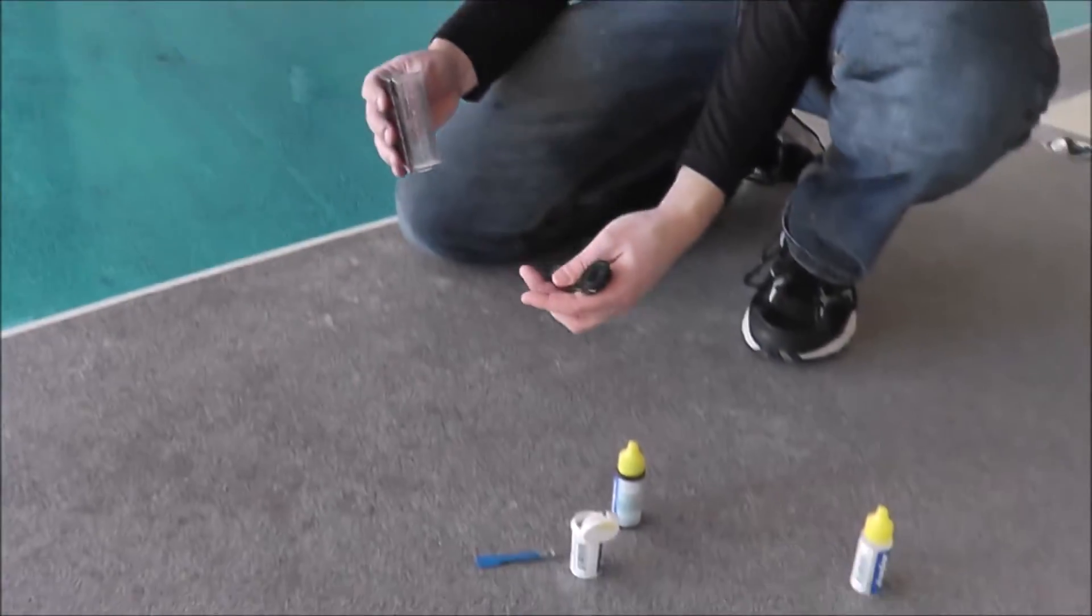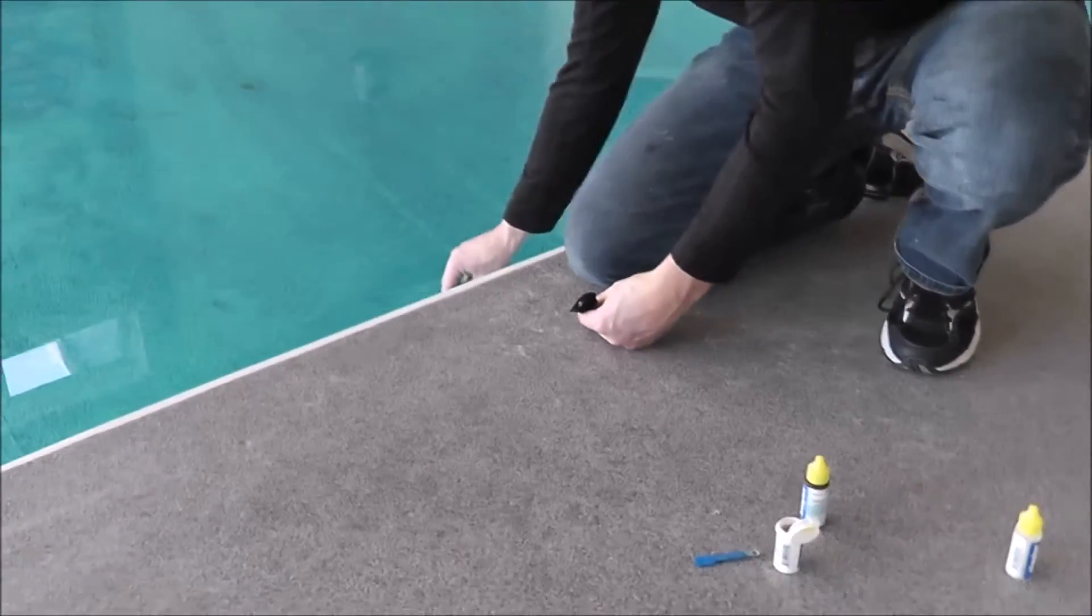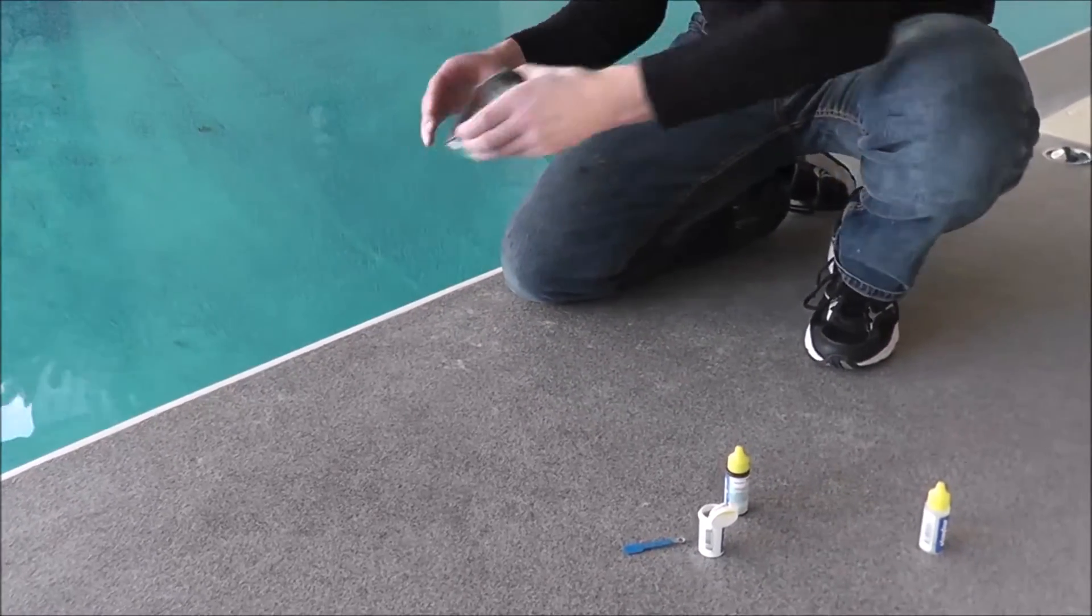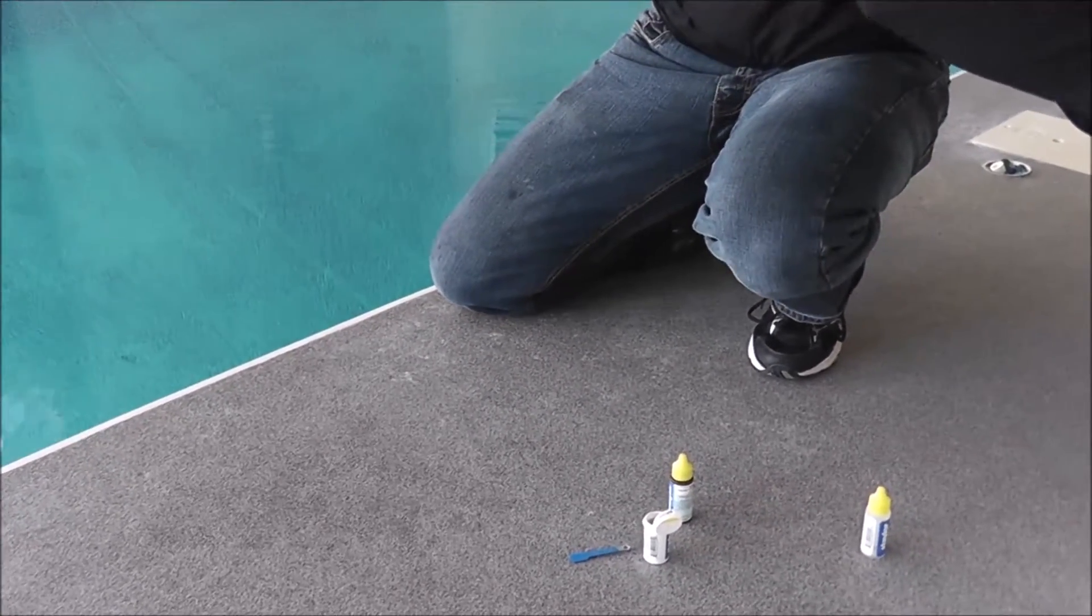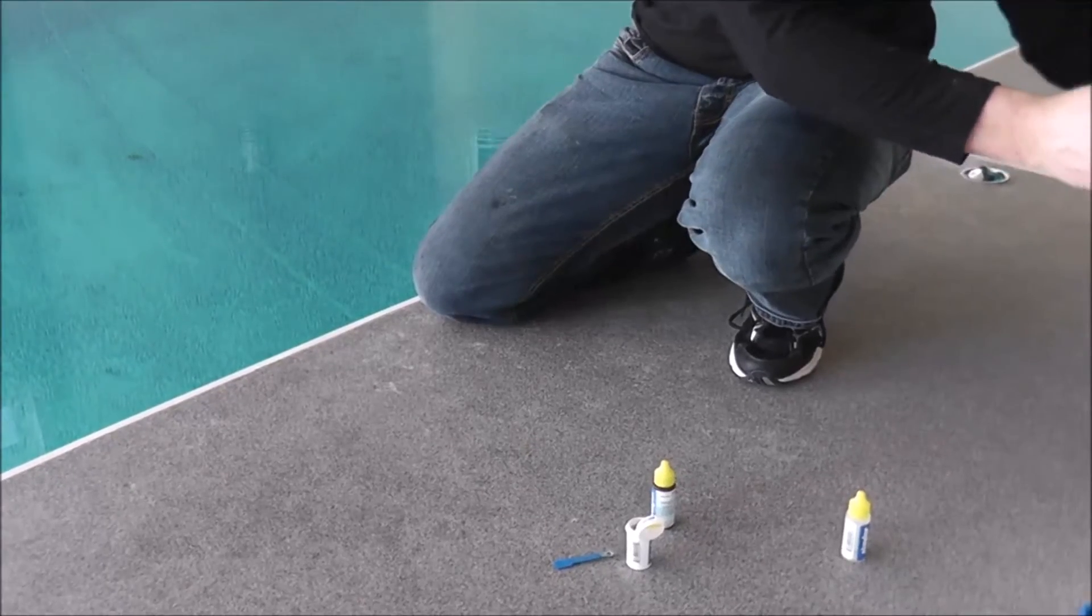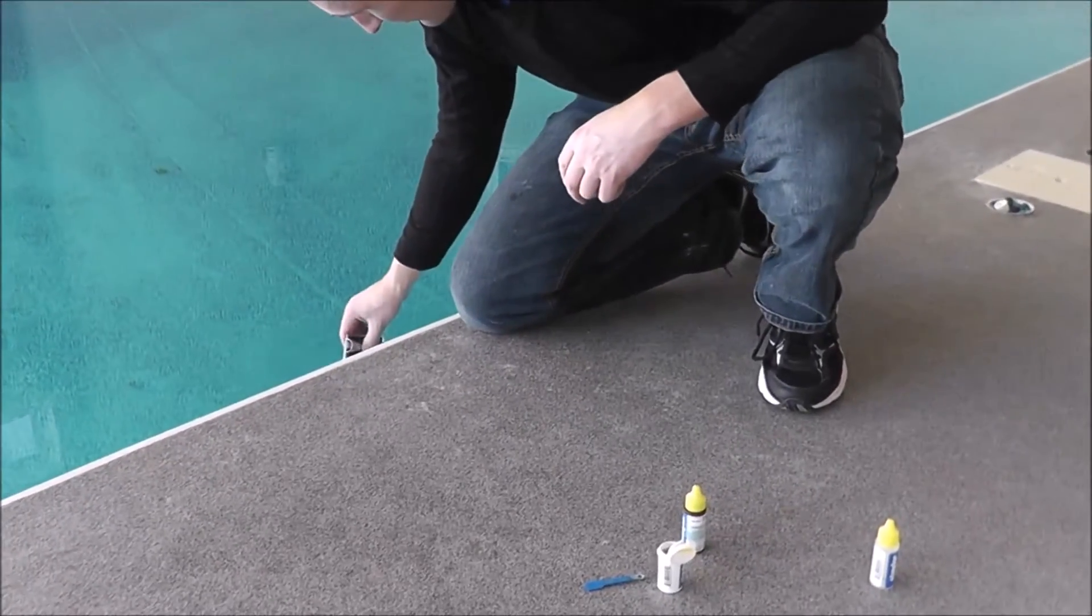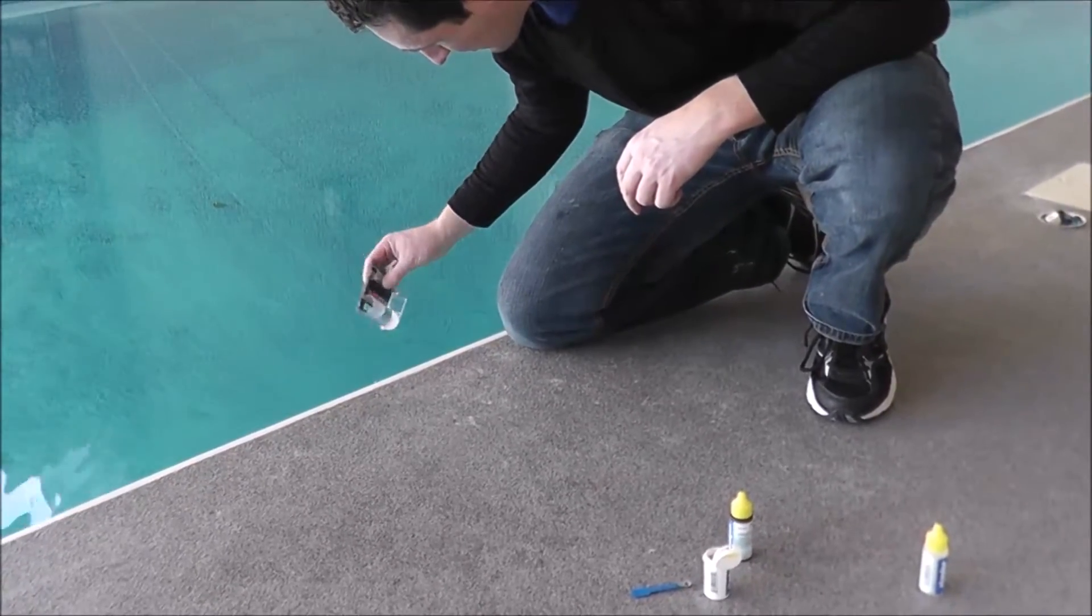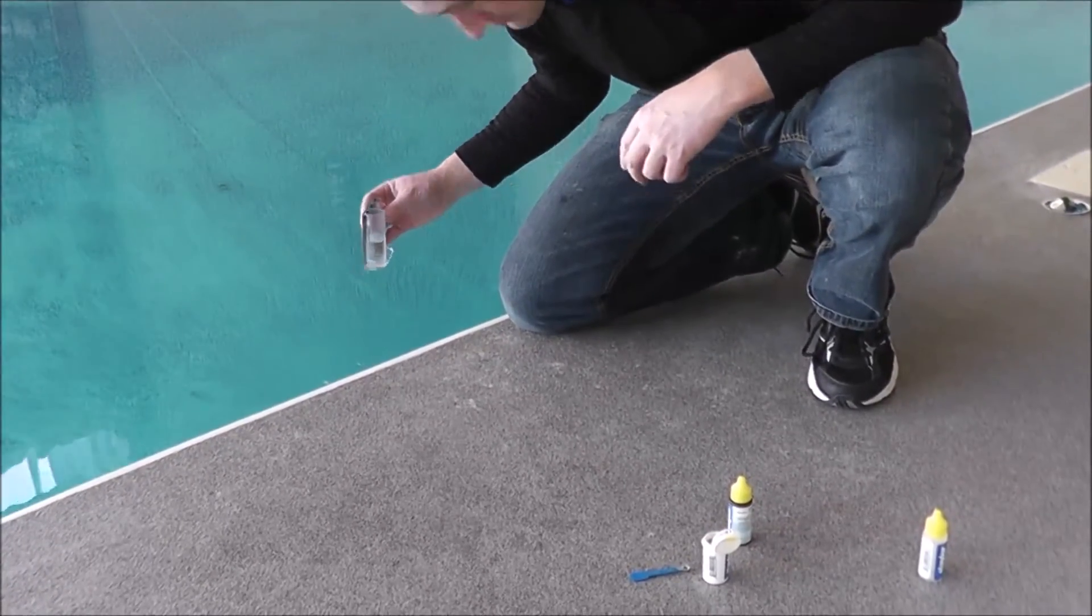So the first thing, we're using a Taylor test kit here. First thing you want to do, make sure the tester is clean. Put some fresh water in, dump it out. You don't dump it back in the pool, you always dump it outside the pool. So you fill up to the 25mm mark, which is right there.